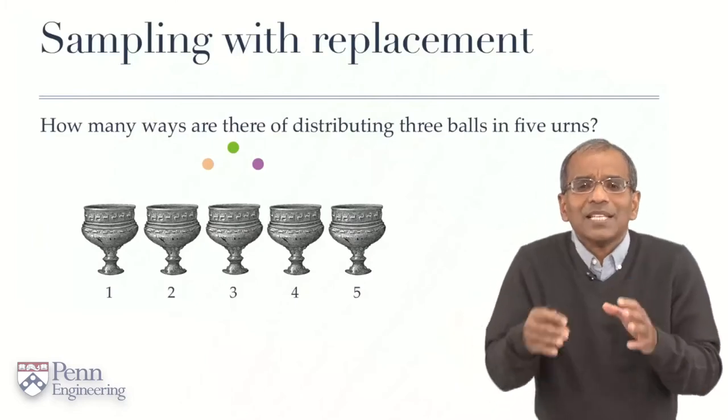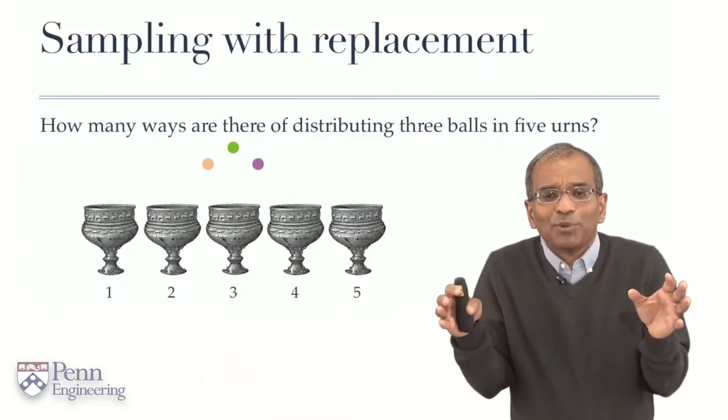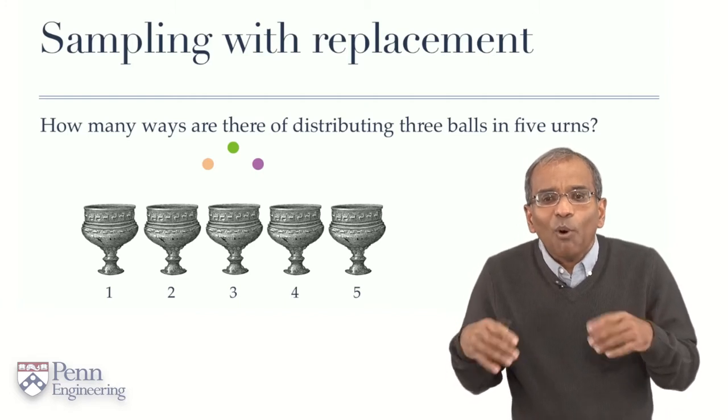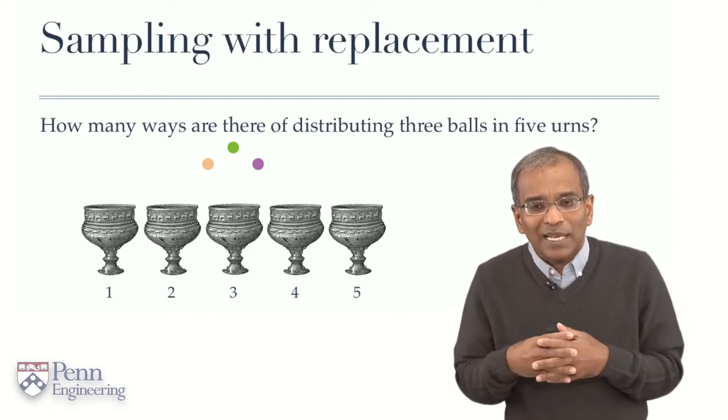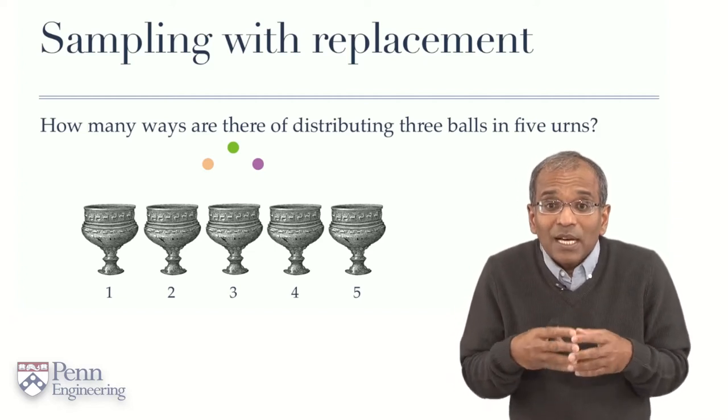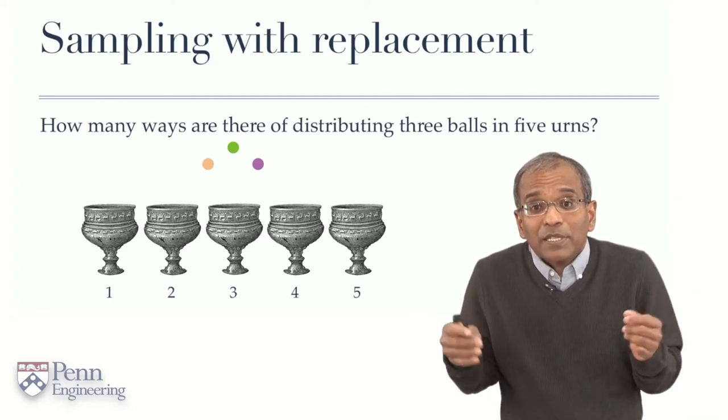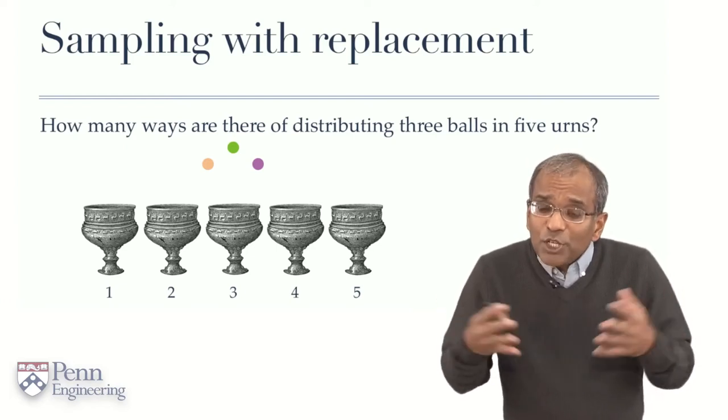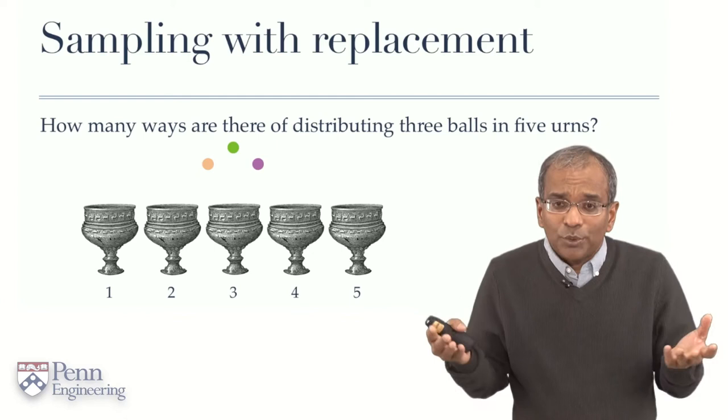Our next order of business is asking how many different ways we can sample under various conditions. Let's start with a very simple and elementary problem. This is part of a genre of problems called ball and urn problems. The language is archaic and who uses urns anymore except perhaps in funerary circumstances, but it is traditional and we will continue to use it.